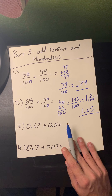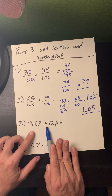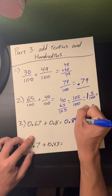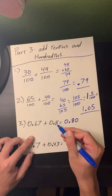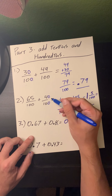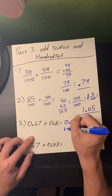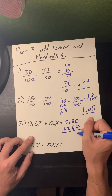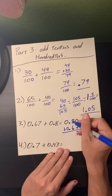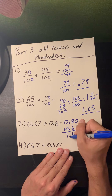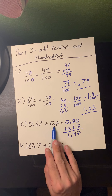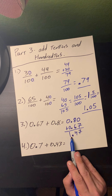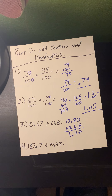The last two problems: 0.67 plus 0.8. These are in horizontal format, but I can put them in a vertical format. I add a placeholder zero after my 8 tenths so it reads as hundredths. Lining up vertically — tenths with tenths, hundredths with hundredths: 7 plus 0 is 7, and 80 plus 60 is 140. So 0.8 plus 0.67 equals 1 and 47 hundredths, or 1.47.